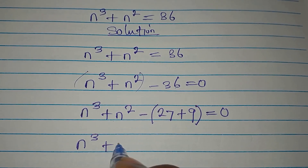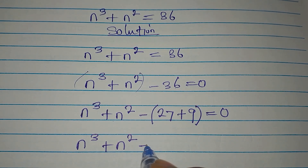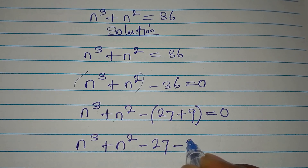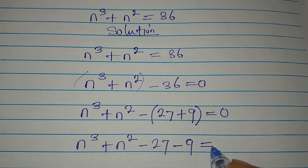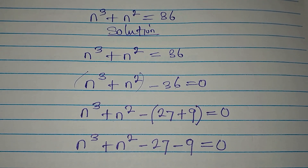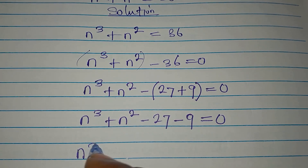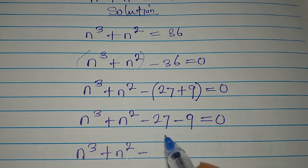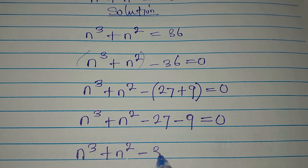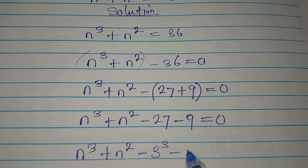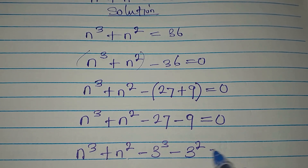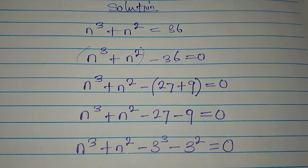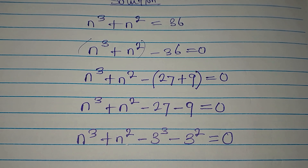If you open this bracket you will have n to the power of 3 plus n to the power of 2 minus 27 minus 9 equals zero, because the negative is expected to open the brackets. Now n to the power of 3 minus 27 is the same thing as 3 to the power of 3, and minus 9 is 3 to the power of 2. This is equal to zero.